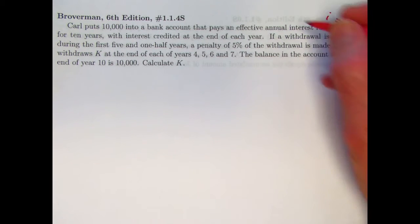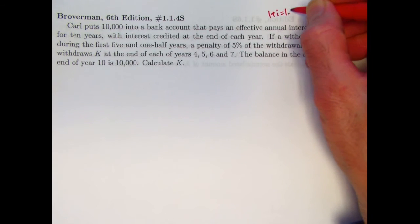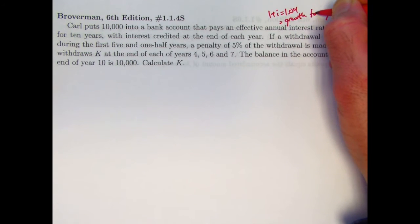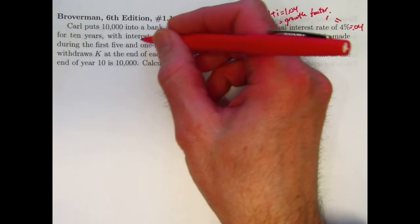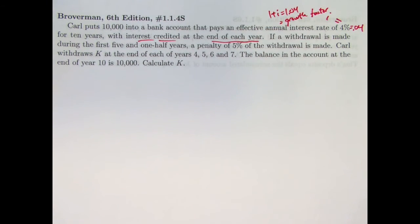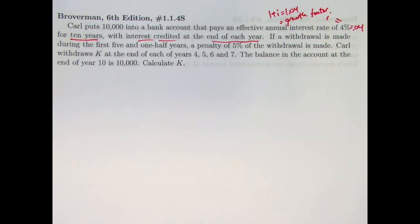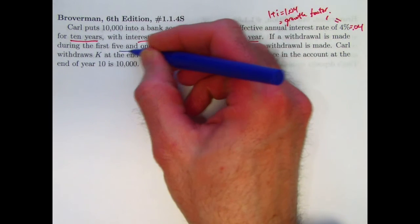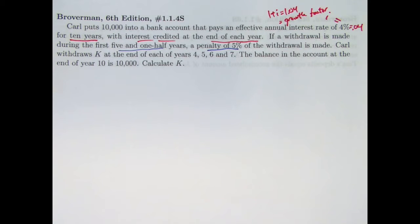An important quantity related to this is the quantity 1 plus I, which would be 1.04. You could call this the growth factor. In fact, to be more specific, it would be the annual growth factor for this problem. Interest is credited at the end of each year, once per year. It's going to be in there for 10 years. There's some withdrawals that are made, and if a withdrawal is made during the first five and one-half years, there's a penalty of 5%. So this might be like a certificate of deposit where you get a penalty if you withdraw too soon.